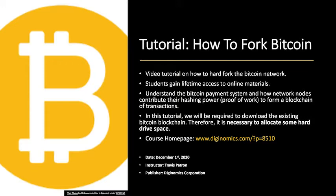We want to understand the Bitcoin payment system and how network nodes contribute their hashing power through a proof-of-work algorithm to form a blockchain of transactions. We're also going to look at potential methods of scaling Bitcoin so that we can accommodate more transactions and store existing transactions more efficiently.